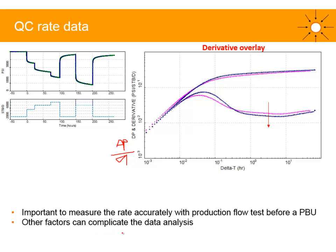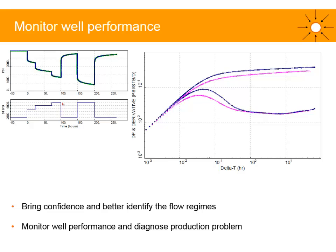There are other factors that complicate data analysis, covered in a separate well test session. With the correct rate, you will see consistency in the derivative response — the two derivatives share the same stabilization indicative of KH over mu, dictated by reservoir properties. The derivative overlay also allows you to monitor skin over time: for the second PBU in dark blue, there is a higher vertical separation, meaning a higher skin, indicating that skin is increasing between the two PBUs.